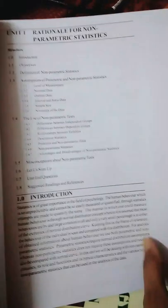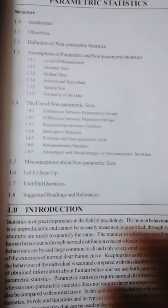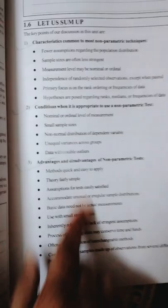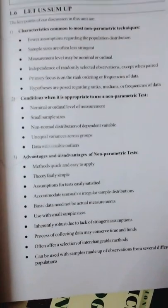Then fourth block, in first chapter it's all about non-parametric statistics. So if you want to read about it from this book you can do that also. And in the summary they have written very nicely these points: characteristics, conditions when it's appropriate to use non-parametric, and advantages and disadvantages.